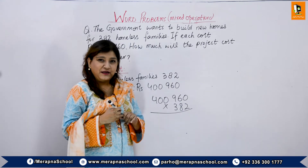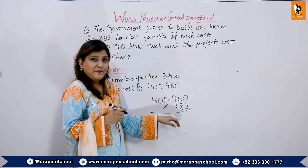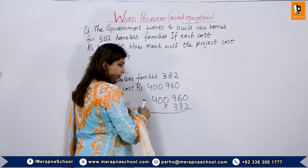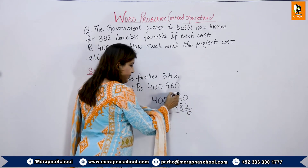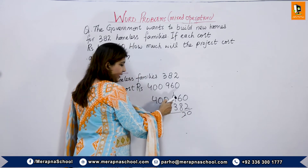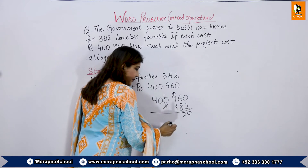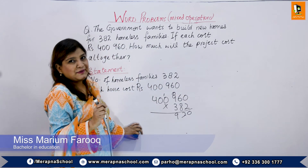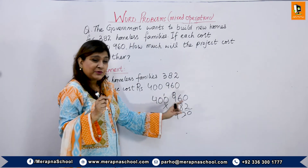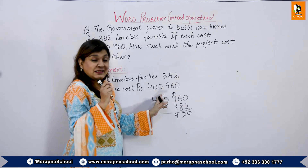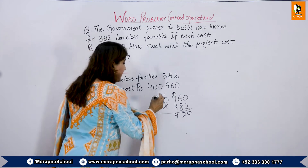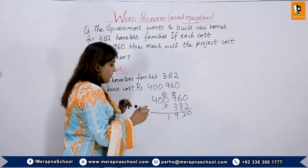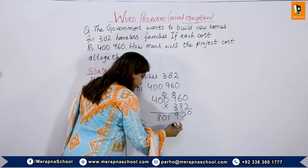We multiply step by step — first multiply 2 with all digits, then 8, then 3. 2 times 0 is 0. 2 times 6 is 12 — 1 carry, write 2. 2 times 9 is 18, plus 1 is 19 — 1 carry, write 9. 2 times 0 is 0, plus carry 1 is 1. 2 times 0 is 0. 2 times 4 is 8. First partial product: 801,920.